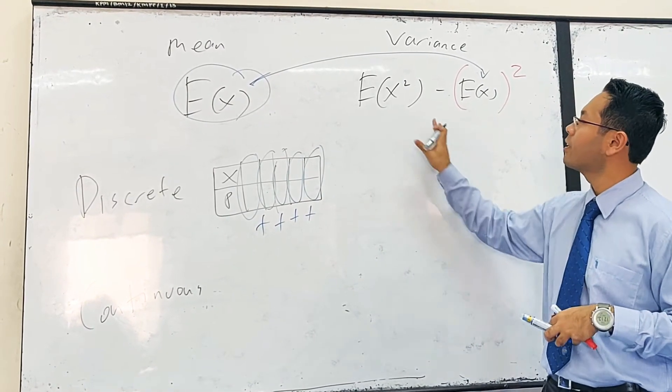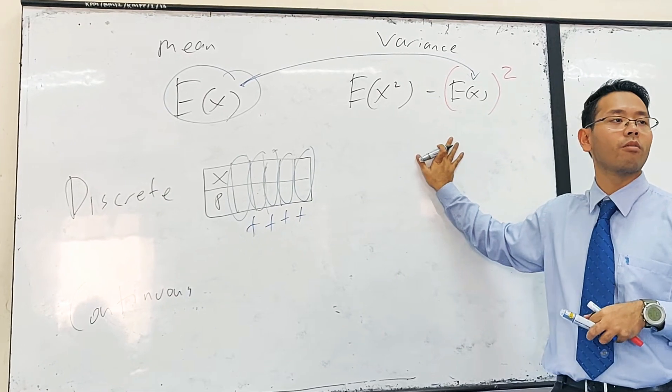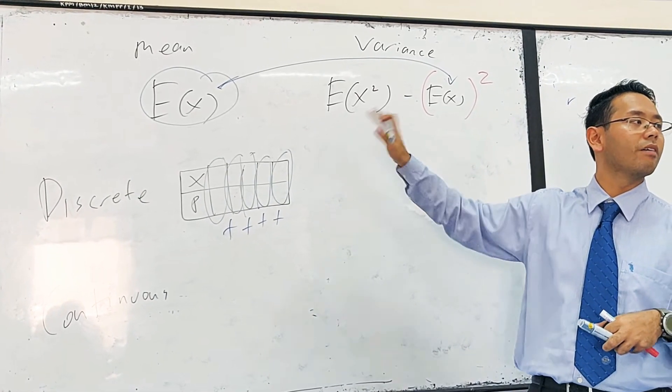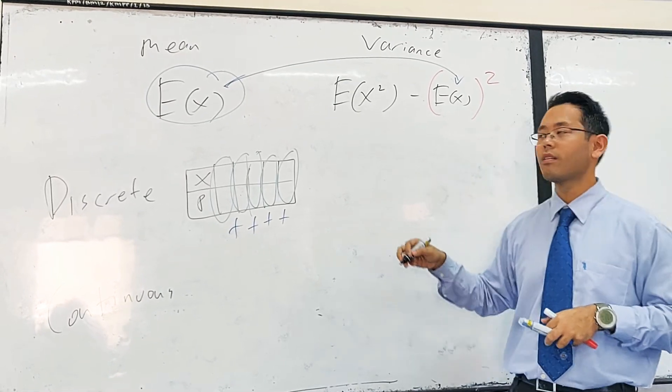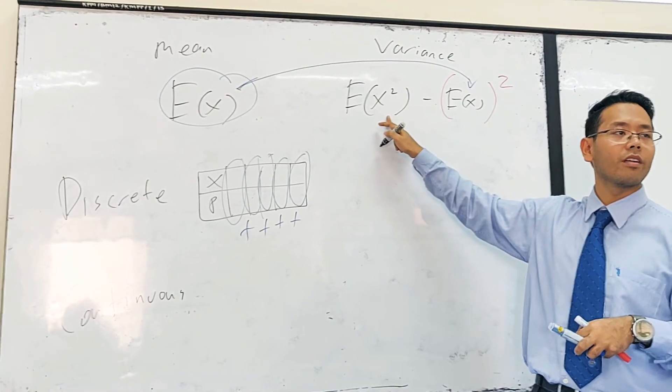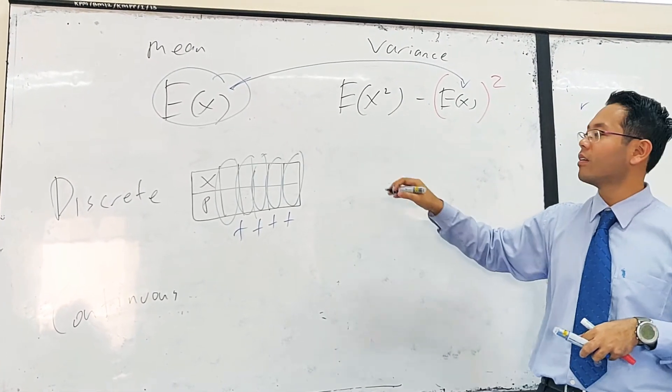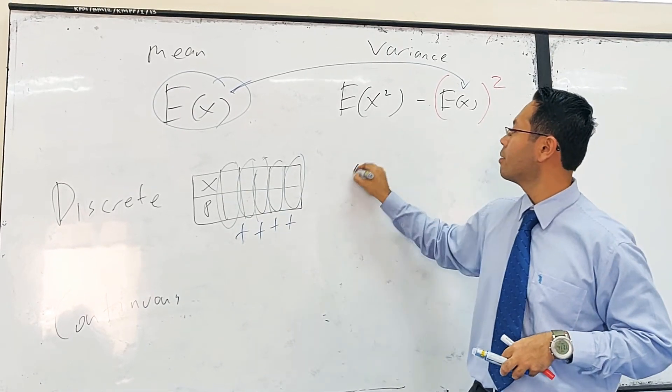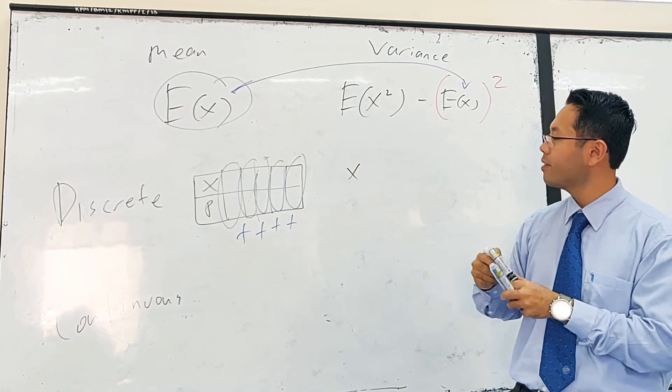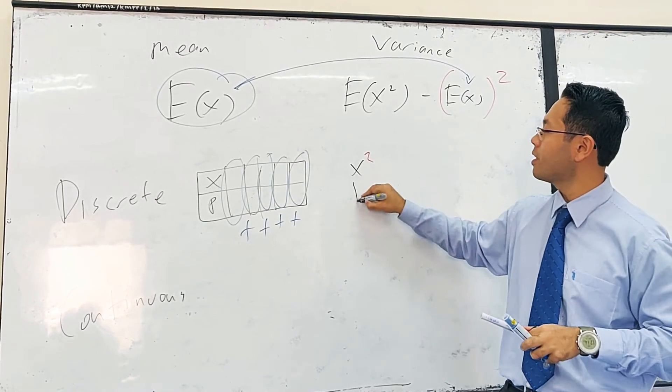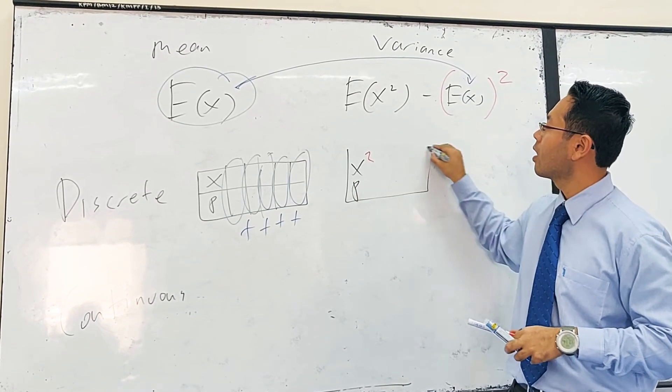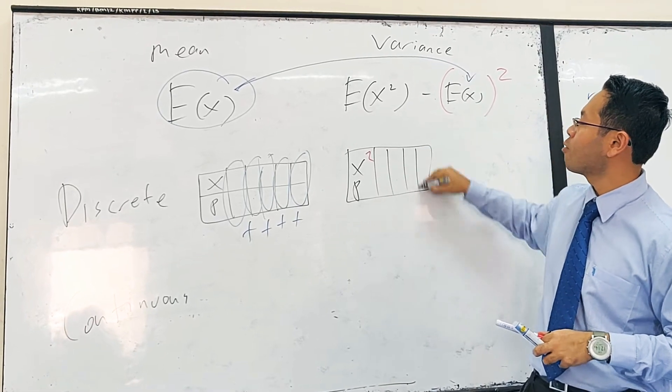Now, what about if I ask you for the variance for discrete? How do you find the E(X²)? Let's take out x. We have x squared. We have to write x squared. Probability.